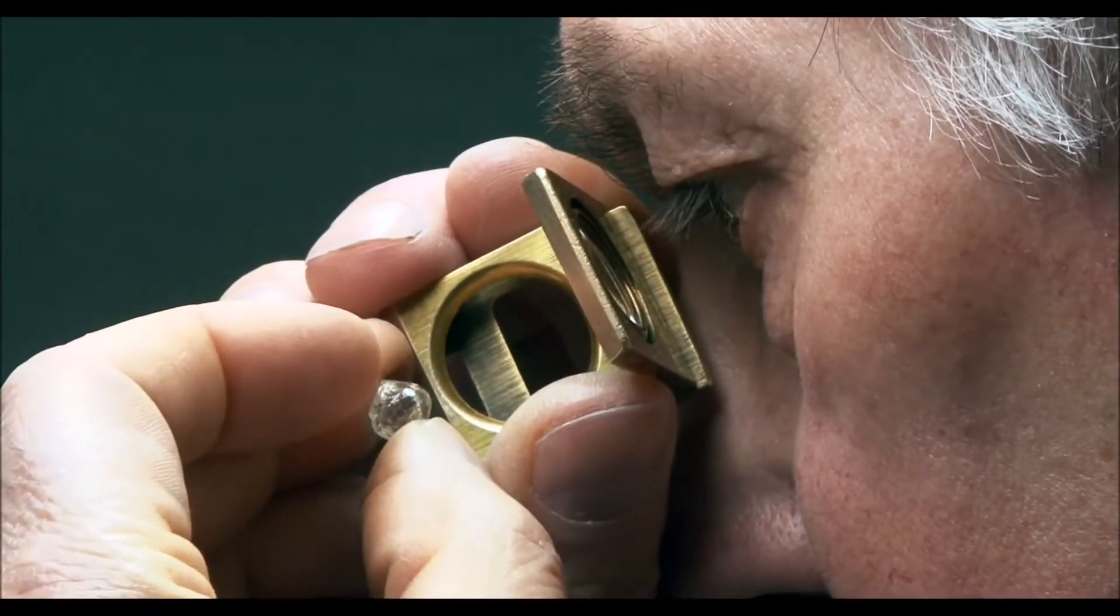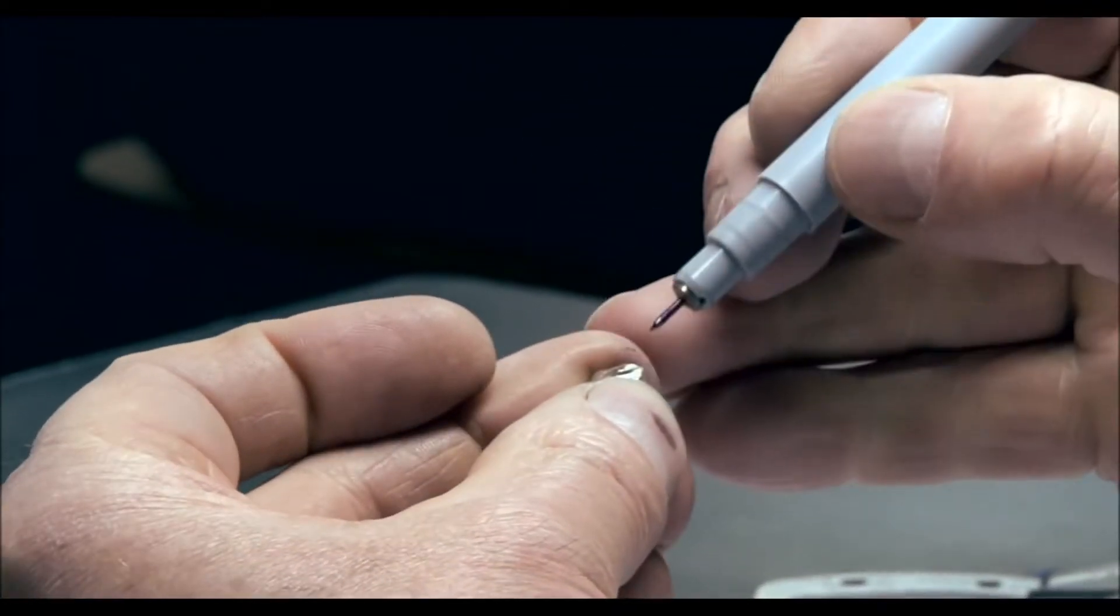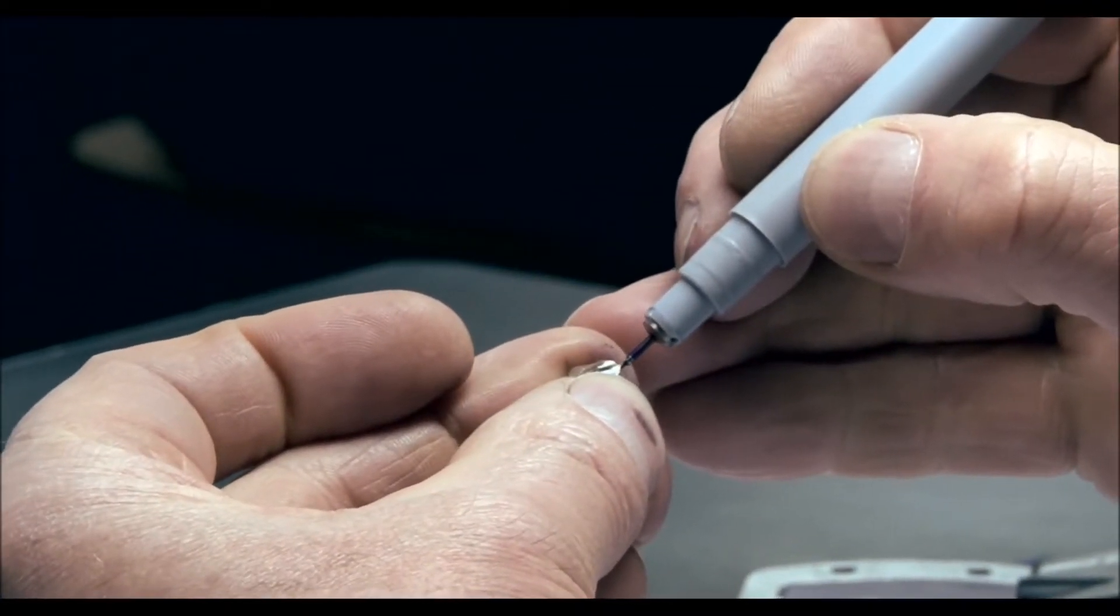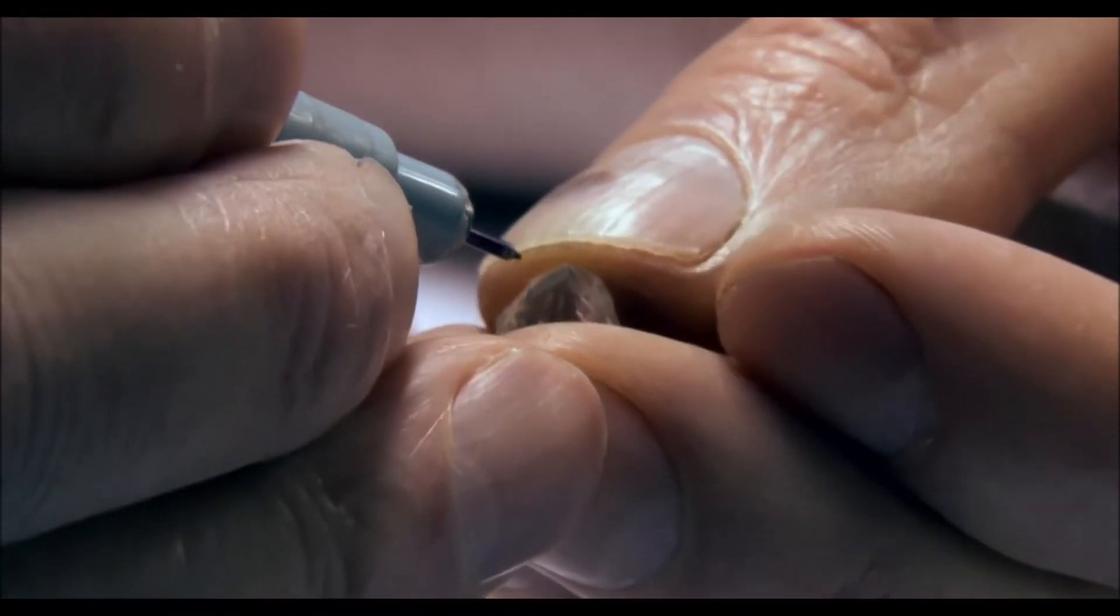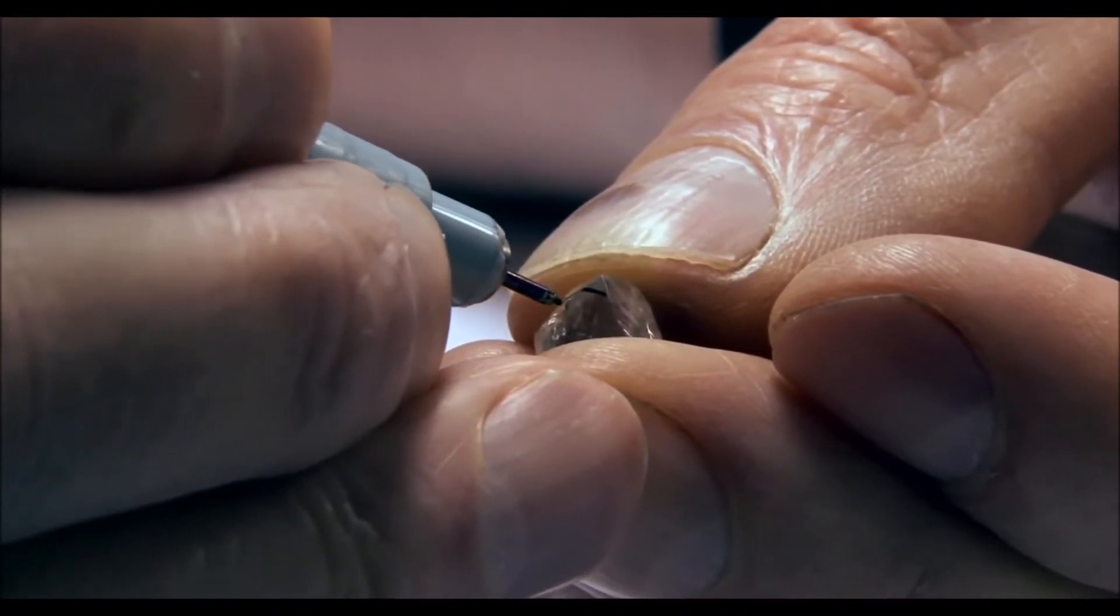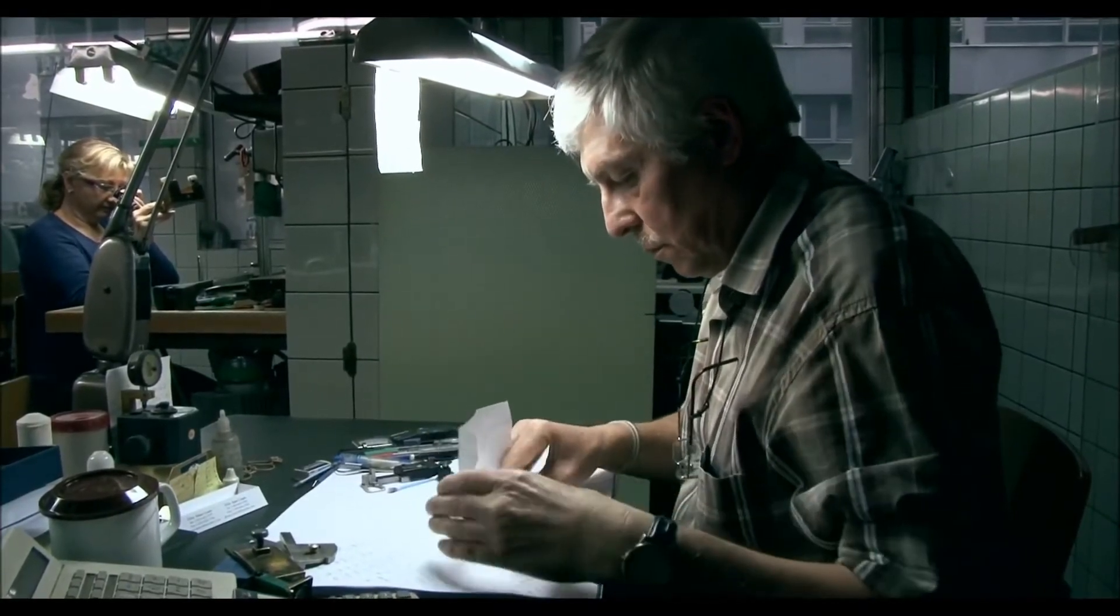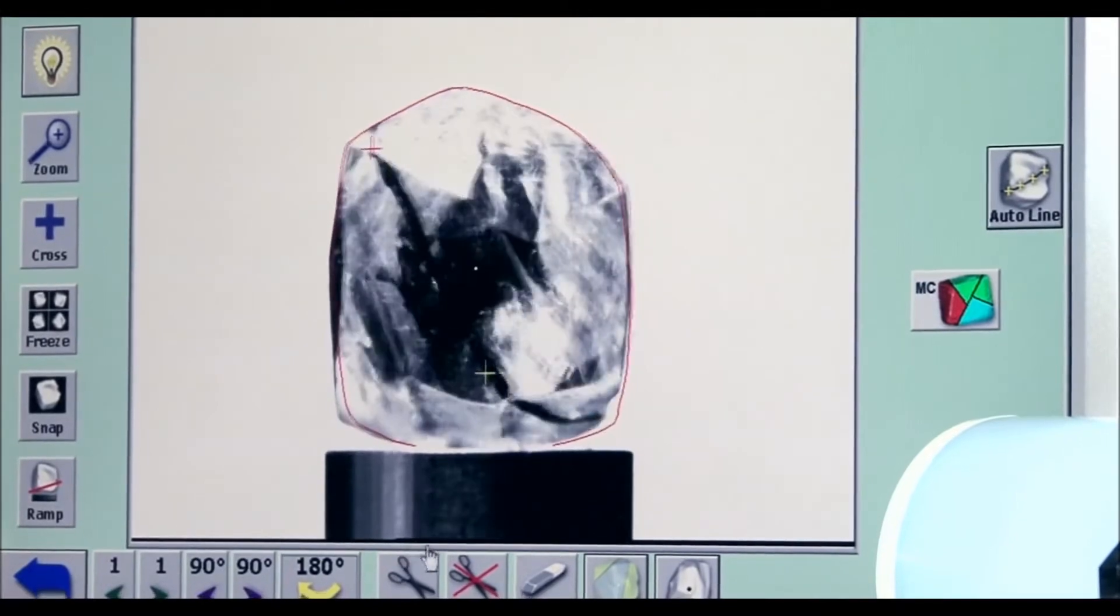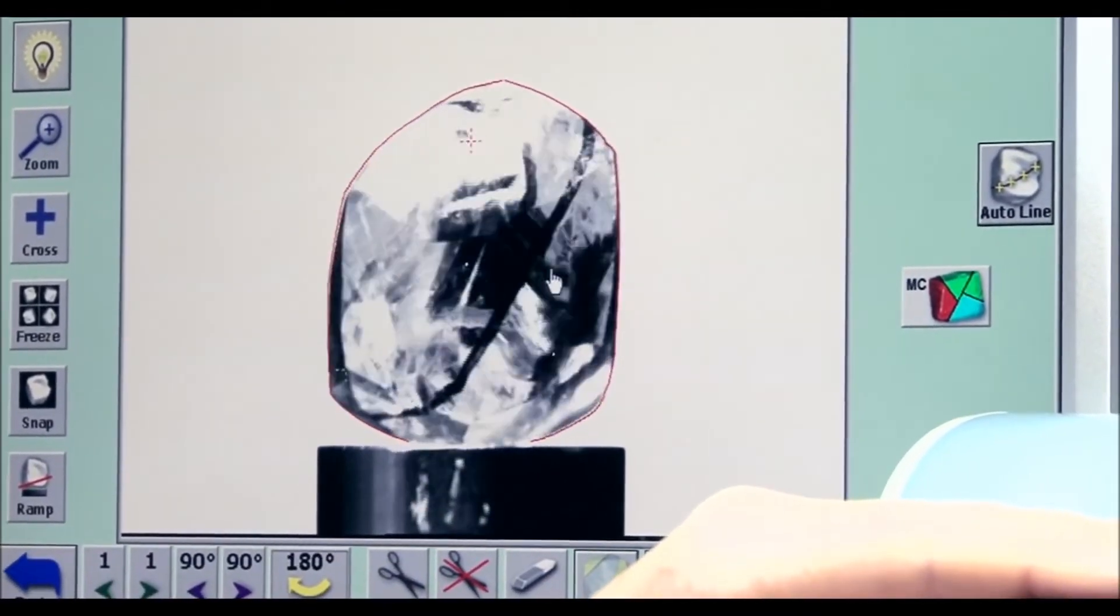It's now their job to assess each rough diamond individually and to create a cutting plan which details exactly the size and angle of every facet for the diamond. Each diamond is first scanned into a computer using a SARIN machine, and then using sophisticated computer software, the different cutting options can be analyzed.